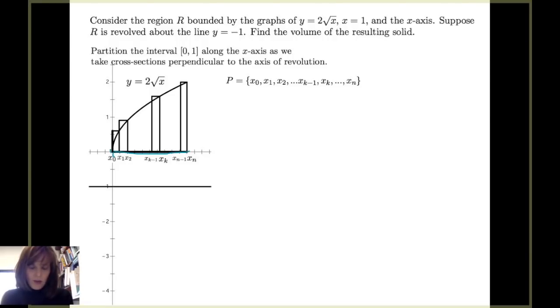And ultimately, I want to find what happens when this k-th rectangle is revolved around the line y equals negative 1 in order to find the volume of the k-th slice. So let's consider what happens as this rectangle is revolved around y equals negative 1.